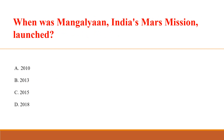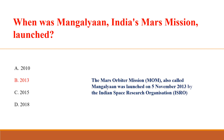When was Mangalyaan, India's Mars mission, launched? Answer B: 2013. The Mars Orbiter Mission, also called Mangalyaan, was launched on 5th November 2013 by the Indian Space Research Organization, ISRO.